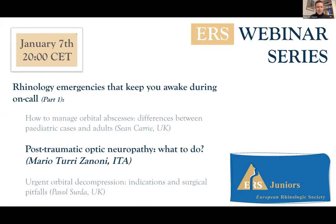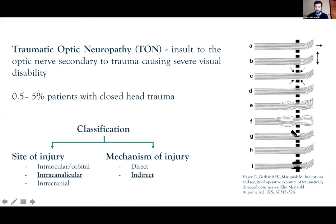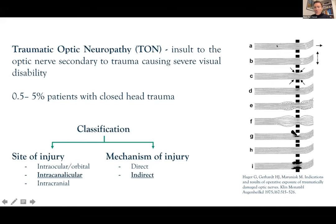I'm going to talk about post-traumatic optic neuropathy - what to do. As you know, optic nerve traumatic disease represents lesions that involve the optic nerve secondary to a trauma resulting in severe visual disability. Luckily this is a very rare occurrence - it may occur in one or two percent of patients with closed head trauma. From a pathogenetical viewpoint, we can have an injury of the fibers inside the optic nerve without damaging the external sheet, or we can have hematoma formation around the optic nerve exerting pressure against it. In other cases we can observe edema within the fibers of the optic nerve with stretching of the fibers, or a small fragment of bone compressing the optic nerve.